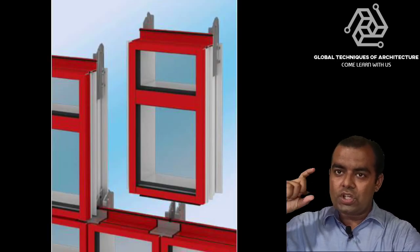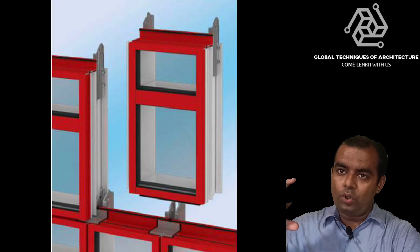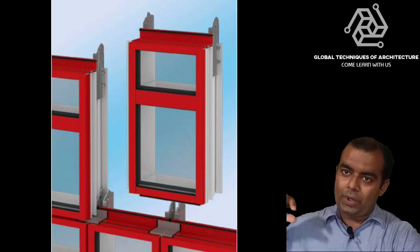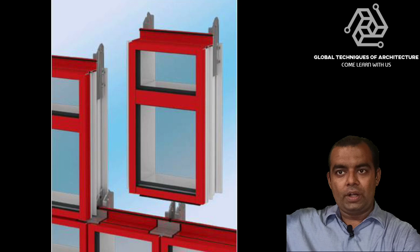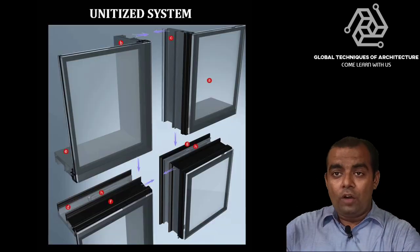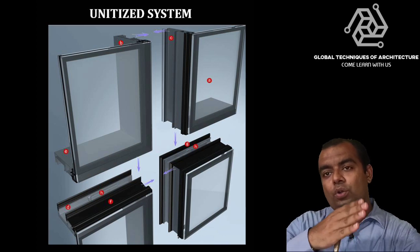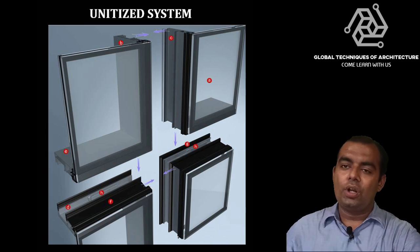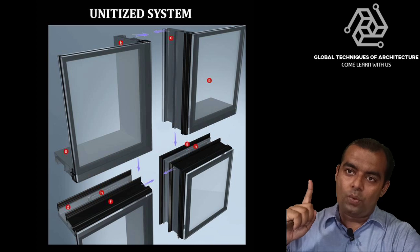So you just have to take one module, finish it off with your vision spandrel and just allow it to get installed into multiple forms. Of course, into this video we are not going to cover the entire thing. This is unitized curtain wall video part one.